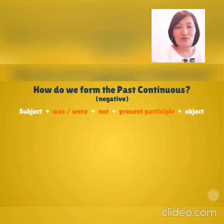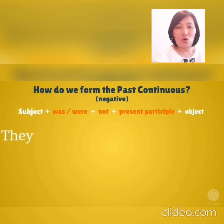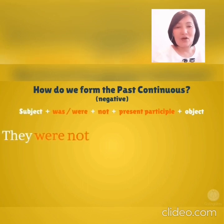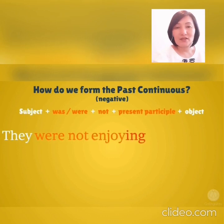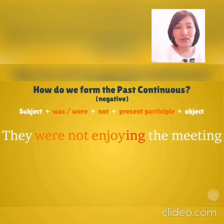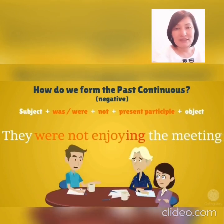How do we form the past continuous negative? Subject plus was/were not plus present participle plus object. For example: They were not enjoying the meeting.